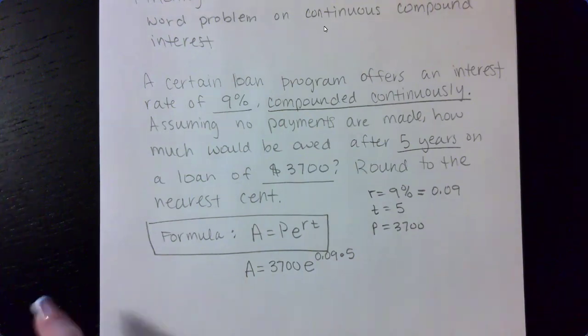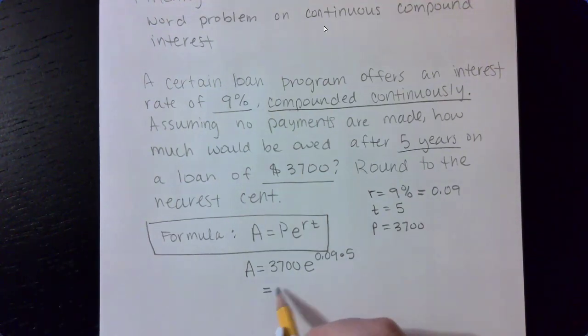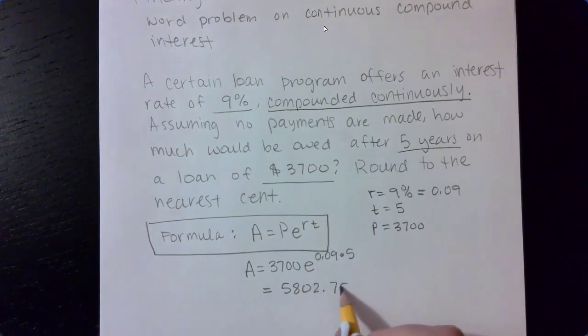And then all I'm going to do is enter that expression into my calculator. And I get $5,802.7550 and so on.